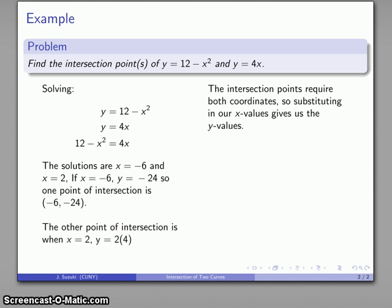And likewise, for my other solution, if x equals 2, I'll substitute that in. And my other point of intersection, if x is equal to 2, y is equal to 4 times 2, y is equal to 8. So the other point of intersection is going to be 2, 8.